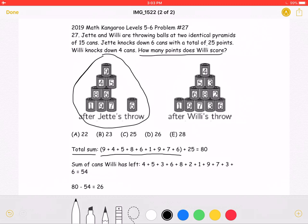plus the 25 points, we will get a total of 80. This means that all the cans have a combined sum of 80.